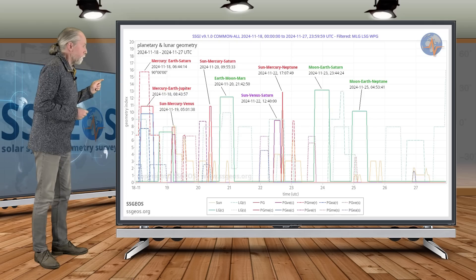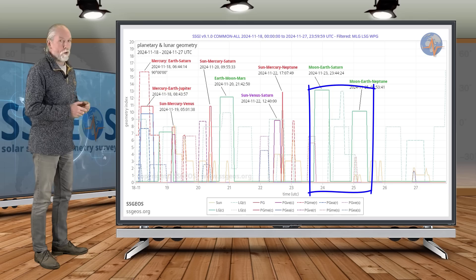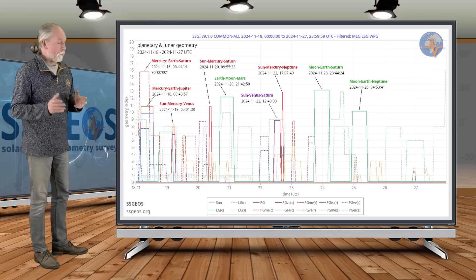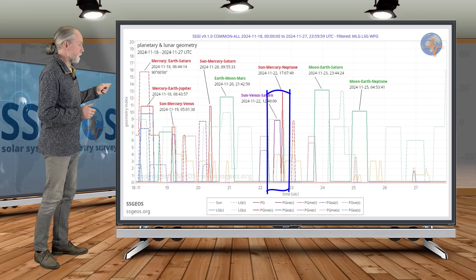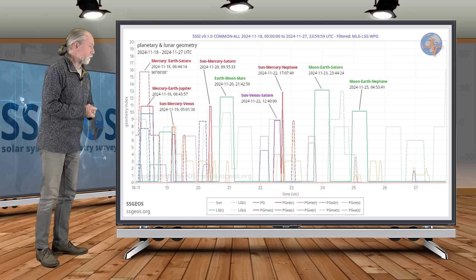Here we have two planetary conjunctions again with Venus and Mercury. It's always critical, and as a result there can be a larger earthquake about two to two and a half days later. But there is something else going on here.